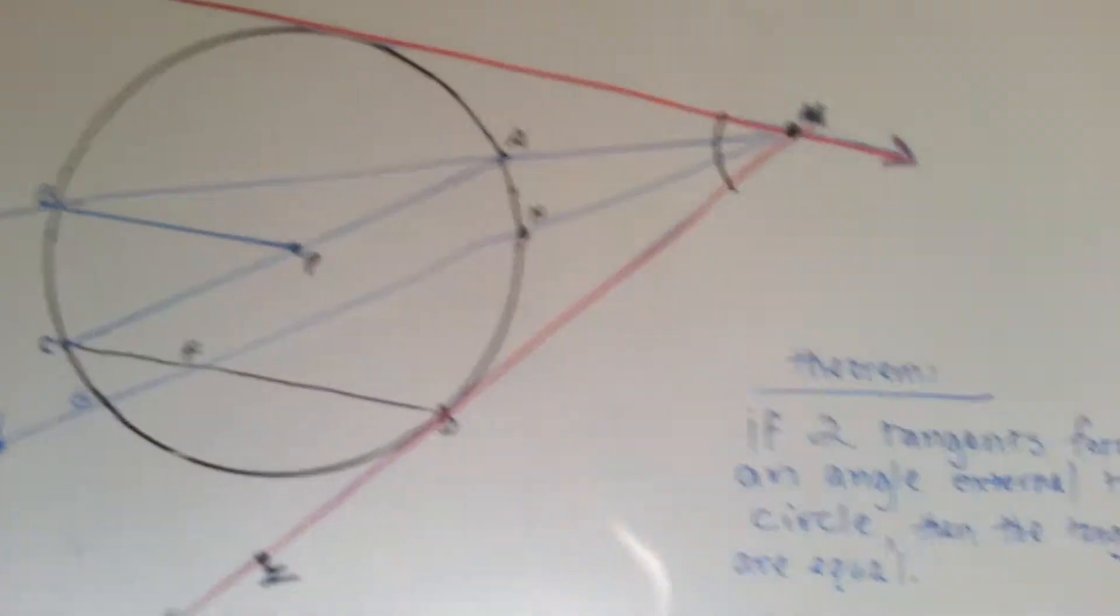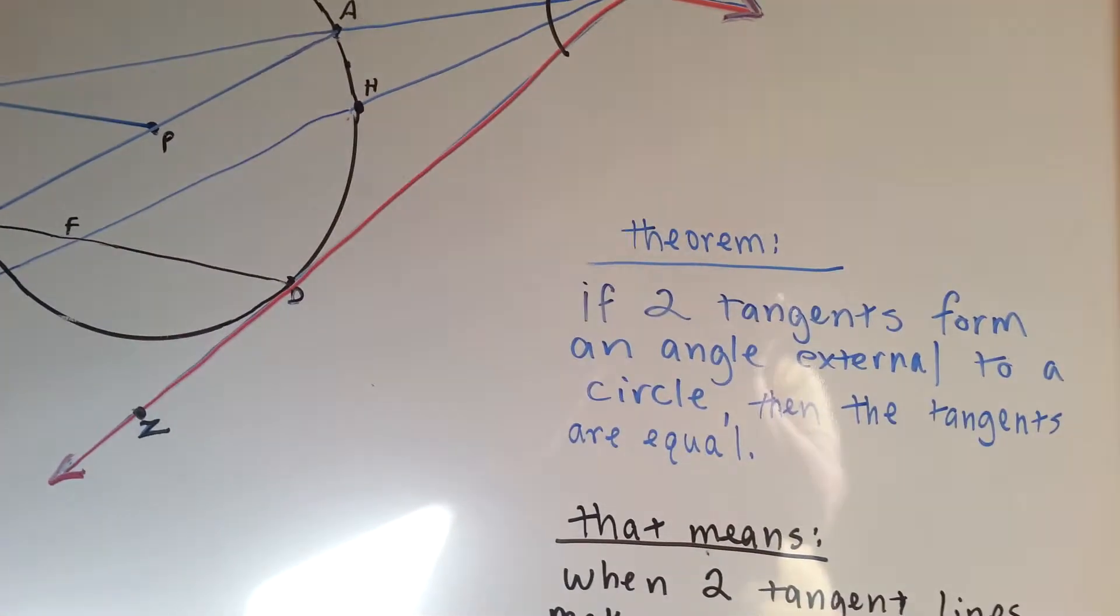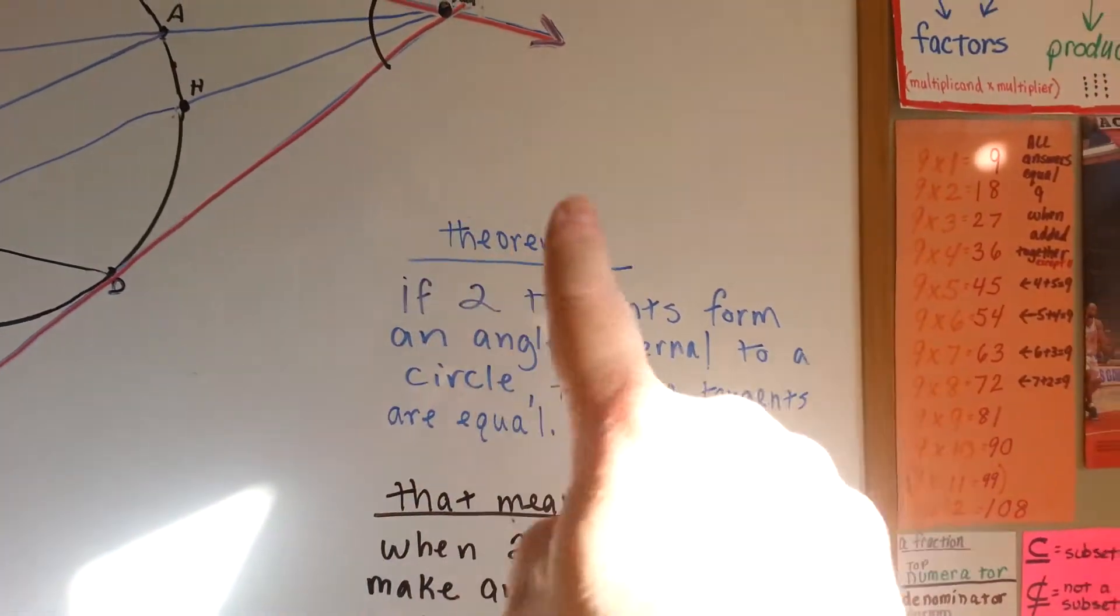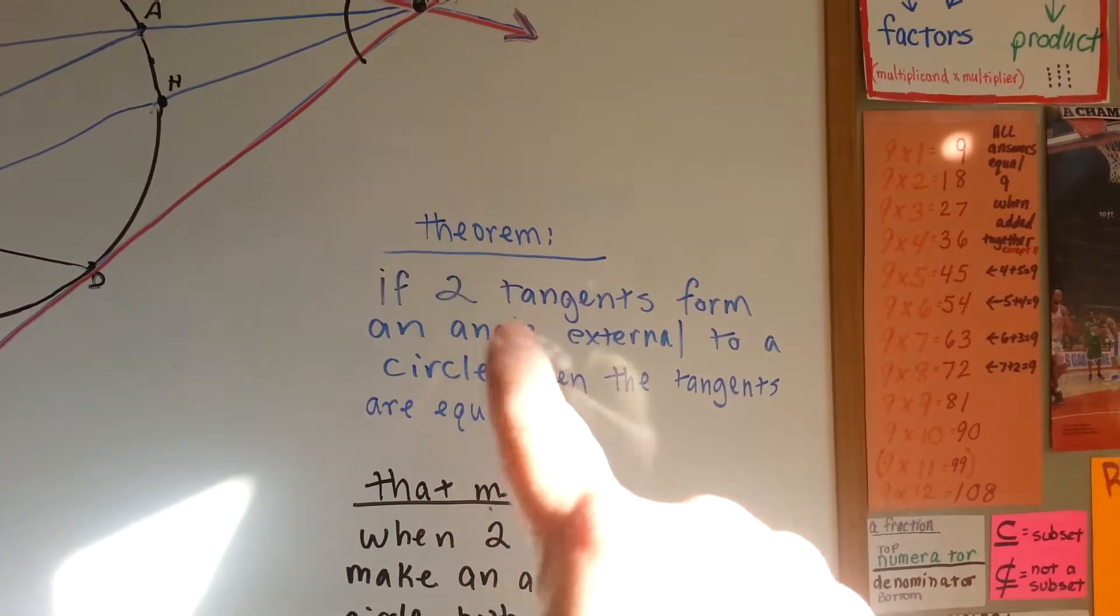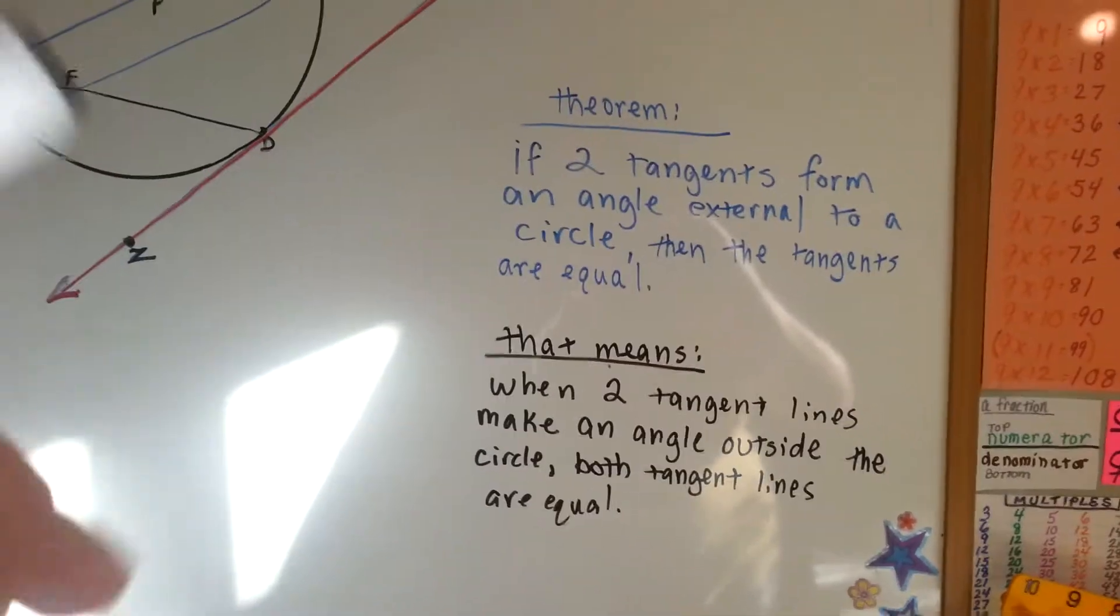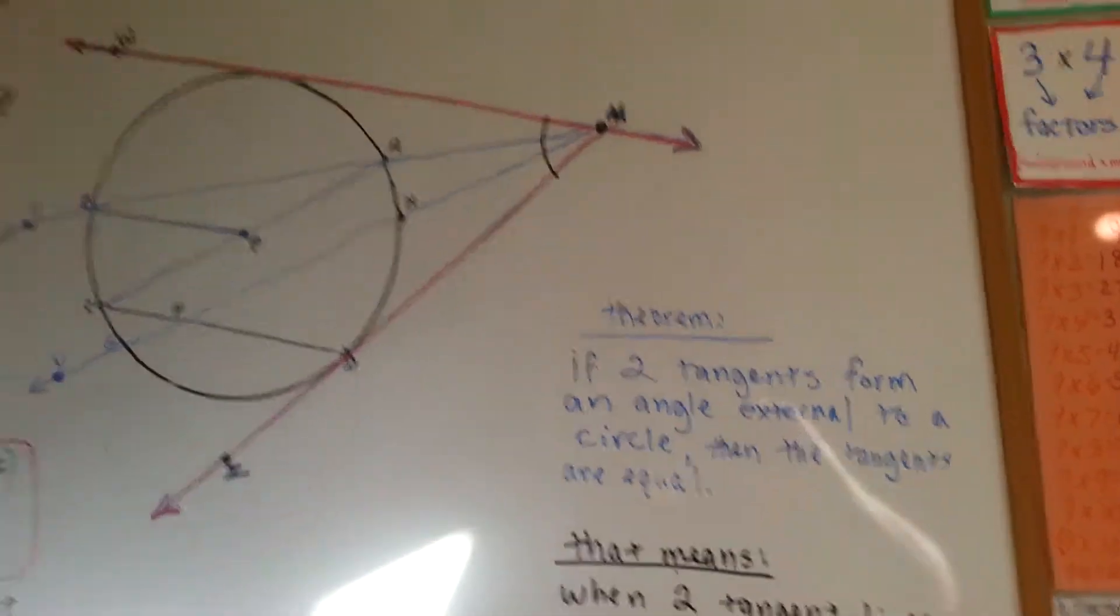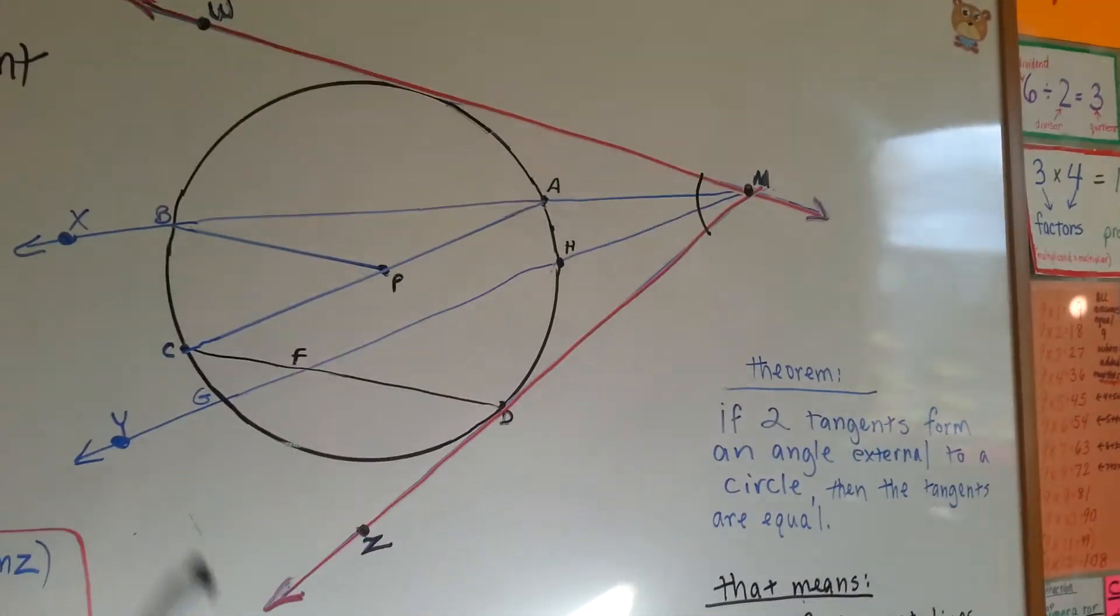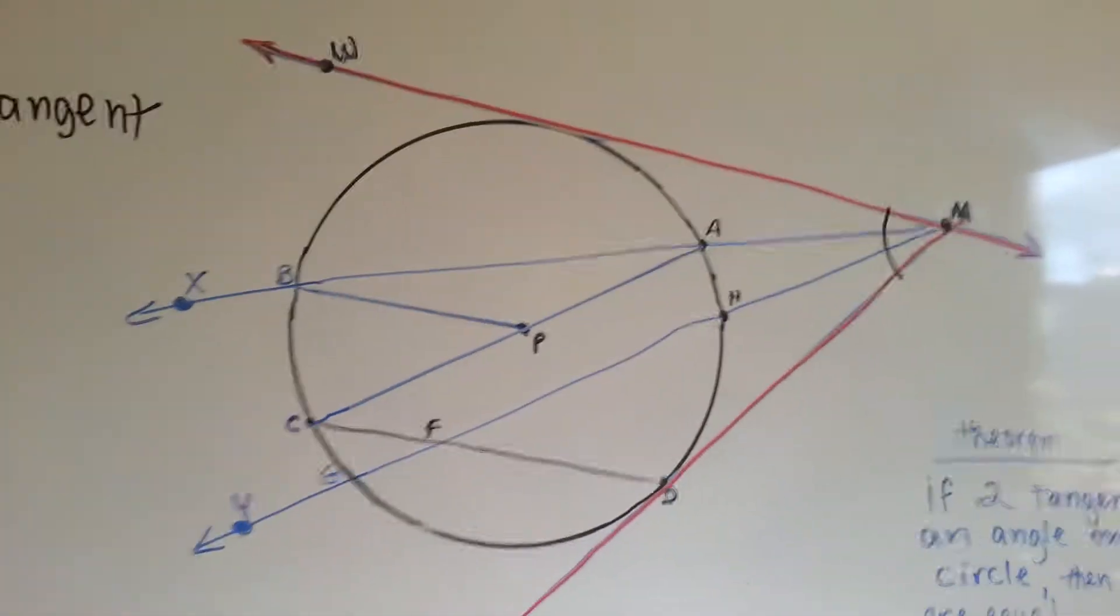So we have a theorem that we're going to throw with this. And it is, if two tangents form an angle external to a circle, then the tangents are equal. That means when two tangent lines make an angle outside the circle, both tangent lines are equal to each other. That will help you in a proof.